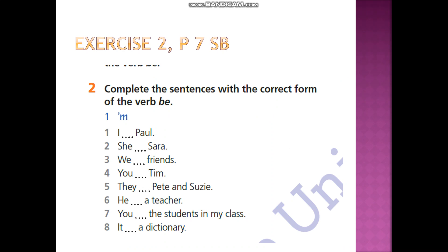I hope you understood the verb 'to be'. Now it's time to do the exercise. Exercise number 2, page H7, student book — complete the sentences with the correct form of the verb 'be'. For example: I am Pum. She — She is Sarah. Continue doing the task in this way.